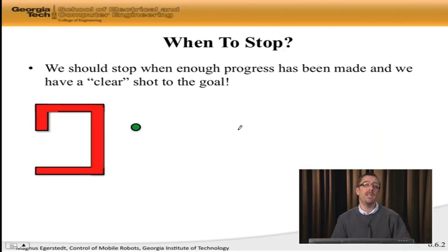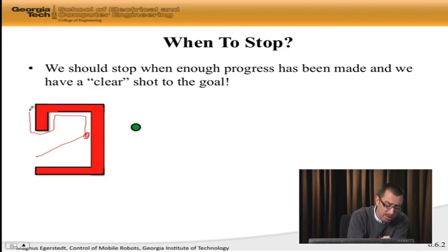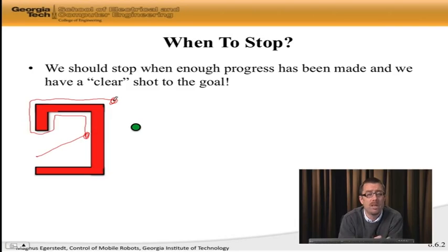And here is what needs to happen. First of all, we need to have made enough progress. What does that mean? It means that if I'm switching here, I don't want to stop here, here, here, because in fact I should stop when I'm closer to the goal than where I was when I started sliding.